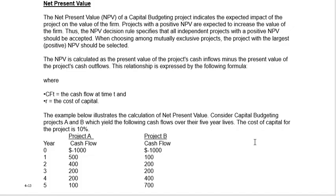Here's the NPV formula: NPV is the initial outlay — how much you spend or invest in the project — plus your income in year one, year two, year three, year four, where income is the net cash produced by your project, each divided by the discount rate raised to the corresponding period. Here's an example of two different projects. In both Project A and Project B, you spend $1,000 today. But the cash flows differ: Project A has $500, $400, $200, $200, $100, while Project B has $100, $200, $200, $400, $400.